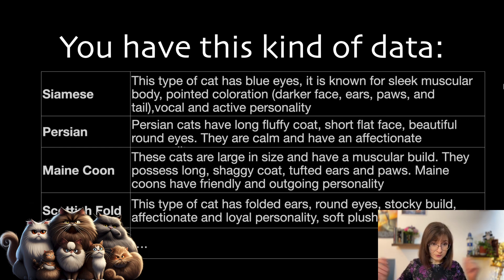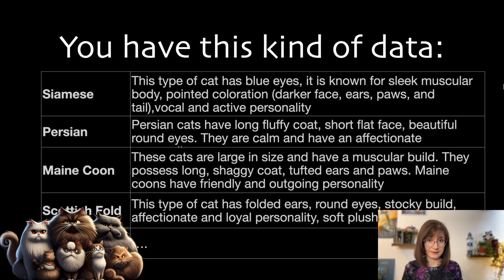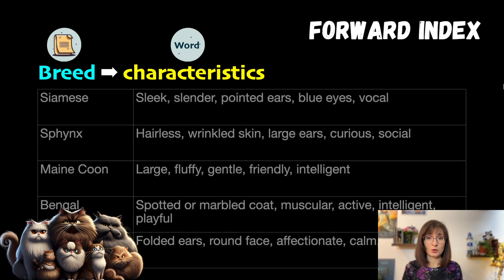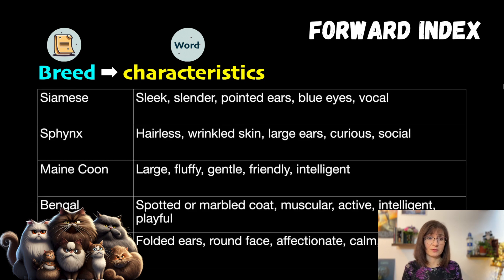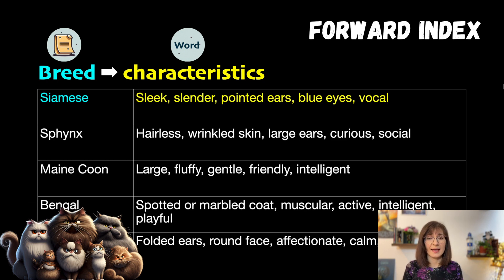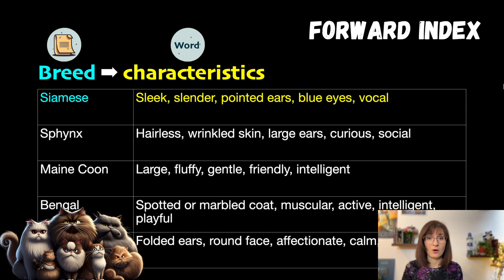The first step would be to create a forward index mapping the breed to a set of keywords. Here you can see that Siamese has a slick slender body, pointed ears, blue eyes and is very, very vocal. Using this forward index, we can now build the inverted one.